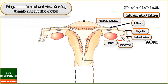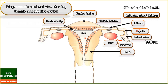The uterus is a hollow, muscular, pear-shaped organ present above and behind the urinary bladder. It is commonly called the womb. It is 7.5 cm in length and 5 cm in breadth. It is divided into fundus, body, and cervix. The fundus is the upper dome-shaped part where the fertilized zygote normally gets attached. The broader part of the uterus is the body, which gradually tapers downward. The body of the uterus leads to the cervix, which is a narrow part with a length of around 2.5 cm. One opening of the cervix is towards the body of the uterus and the other is towards the vagina.